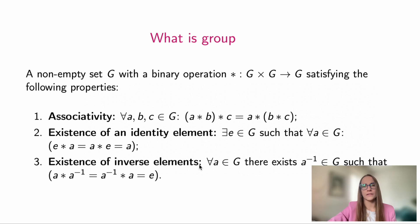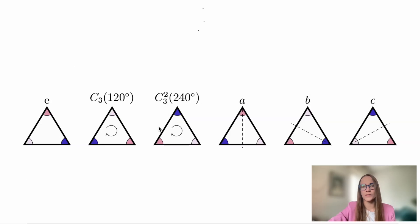We will not be interested in arbitrary groups here, but specifically in groups of symmetries of certain objects. For example, the symmetry group of a triangle, called C3V in Schoenflies notation. It is also sometimes referred to as D3 or S3, don't be surprised if you encounter different names.